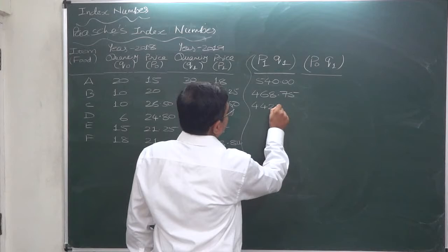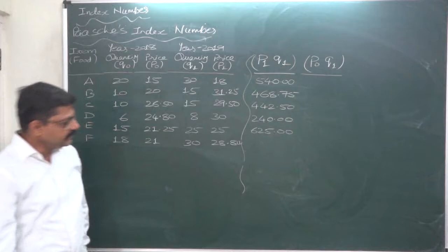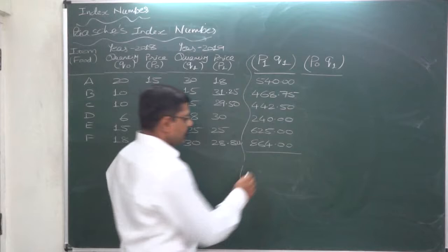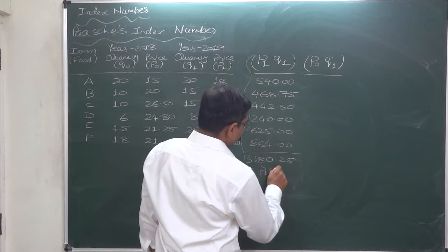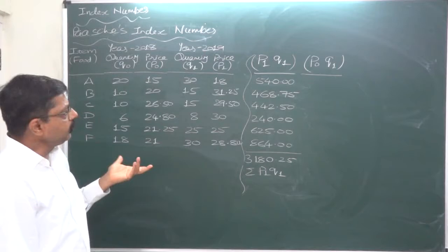8 into 30 = 240. 25 into 25 = 625. And 13 into 28.80 = 374.40... 864. And summation of this: 3180.25. The actual cost we paid in 2019 to consume this much quantity of these six items.